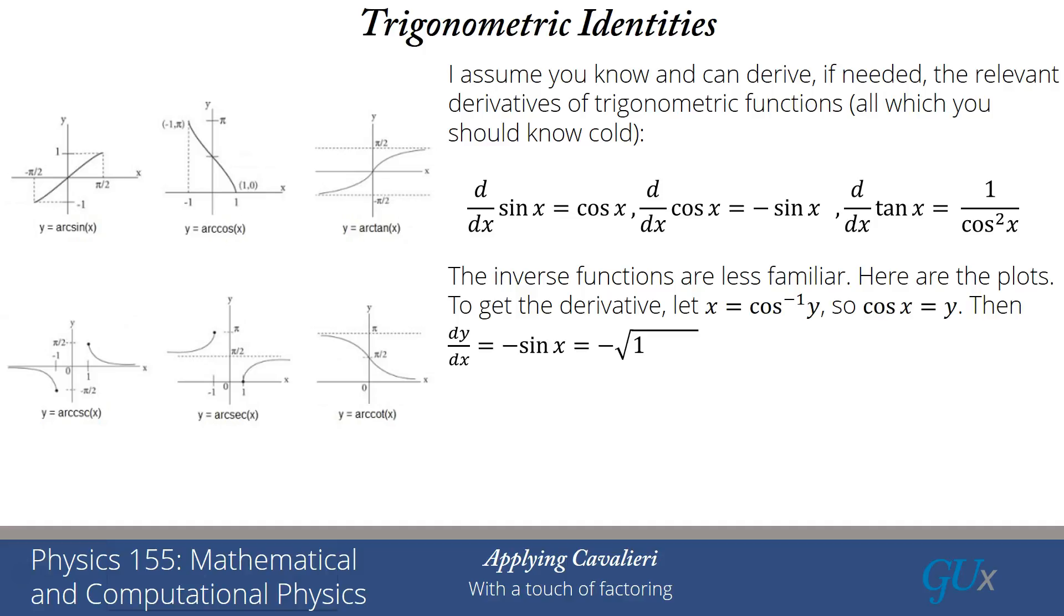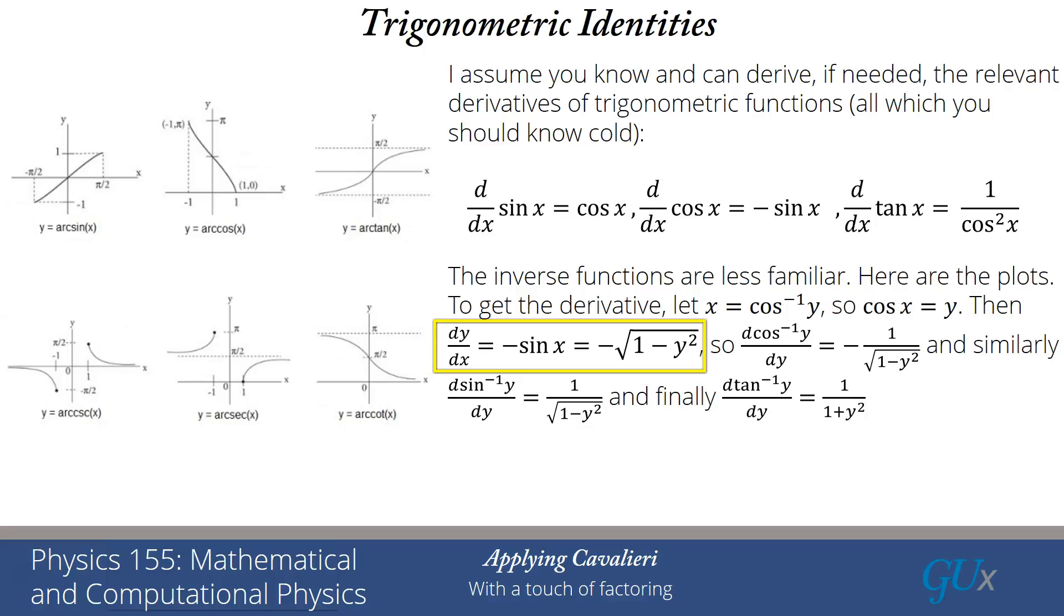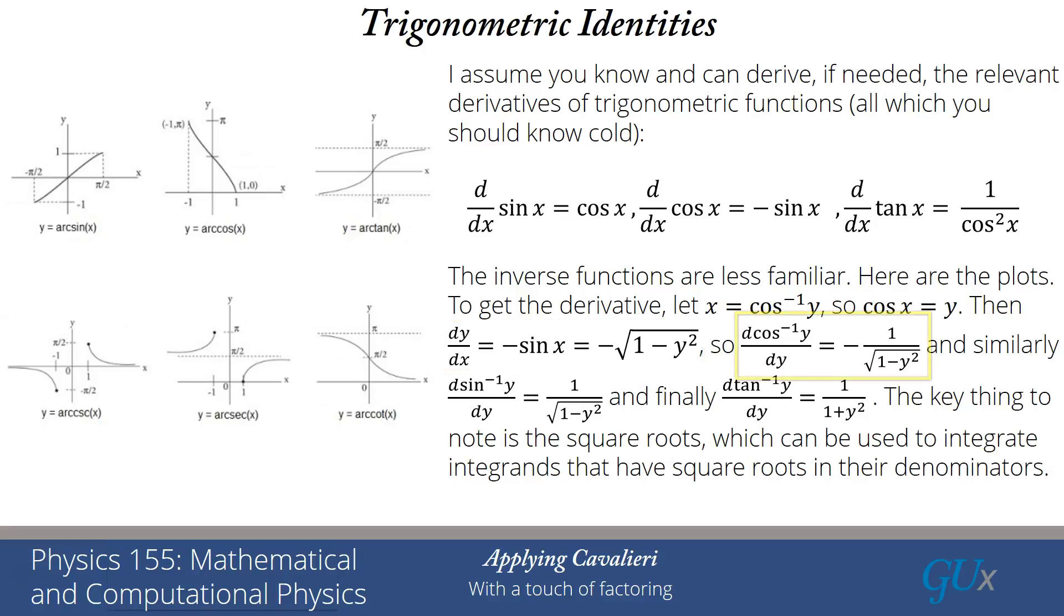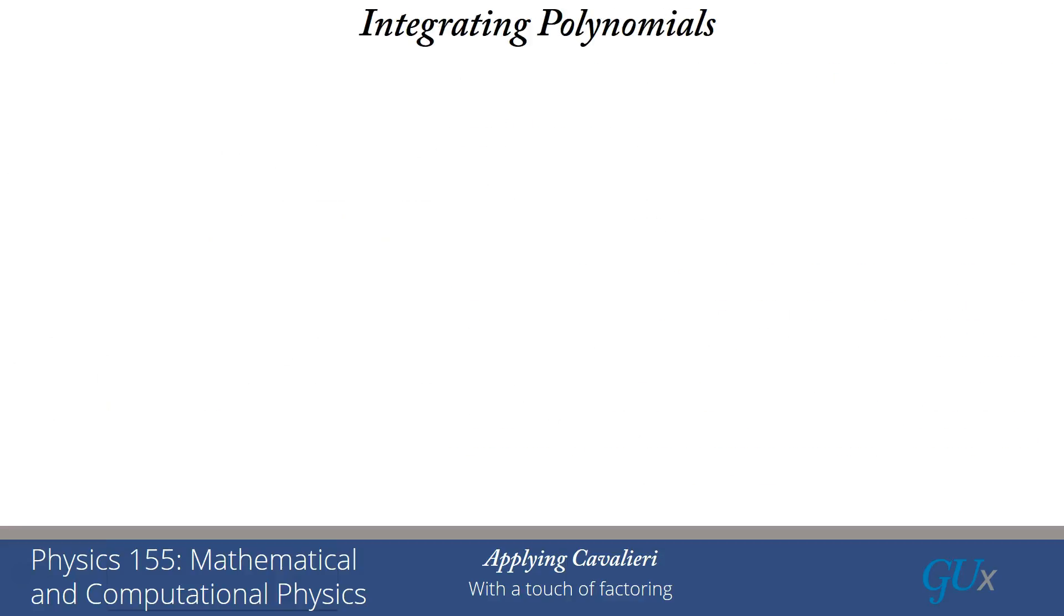The next thing we need to do is figure out how to calculate derivatives of these things. If x = arccos y, that means cos x = y. I know how to take the derivative of a cosine: dy/dx = -sin x. Let me replace sin x in terms of cos x. Sin x is √(1 - cos²x), but cos x = y, so it's equal to √(1 - y²). Now I calculated dy/dx, so I just have to calculate dx/dy to get the derivative of arccos with respect to y, and I get -1/√(1 - y²). You do the same thing for the sine, and you'll get 1/√(1 - y²) without the minus sign. Finally for the arc tangent, you get 1/(1 + y²). The key thing to note is these derivatives naturally have square roots appearing in them, so they can be used to integrate integrands that have square roots in the denominators.